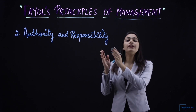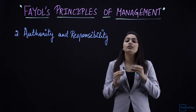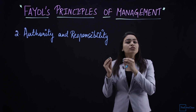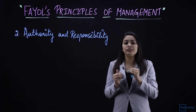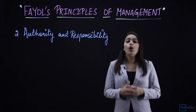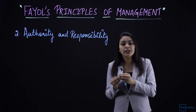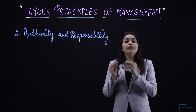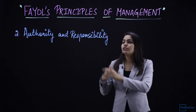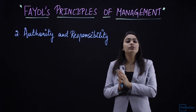The second principle is Authority and Responsibility. Authority means the right to give orders, or the power to give orders — it is the right that comes with a position. Henry Fayol says that in an organization, authority and responsibility need to be balanced.